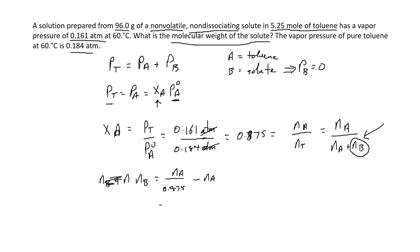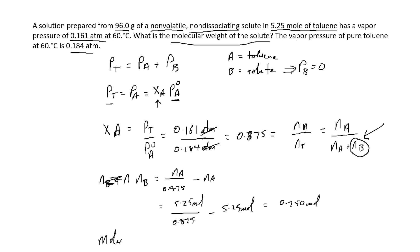Substituting n_A — the moles of solvent — as 5.25 moles: n_B equals 5.25 divided by 0.875 minus 5.25, which works out to 0.750 moles of solute. Now that we have the moles, we can find the molar mass: molar mass equals the mass in grams of the solute, 96.0 grams, divided by the moles, 0.750 moles.